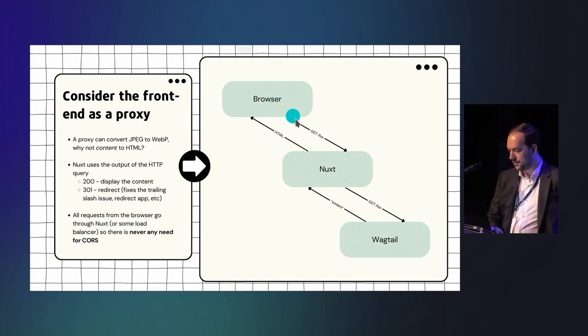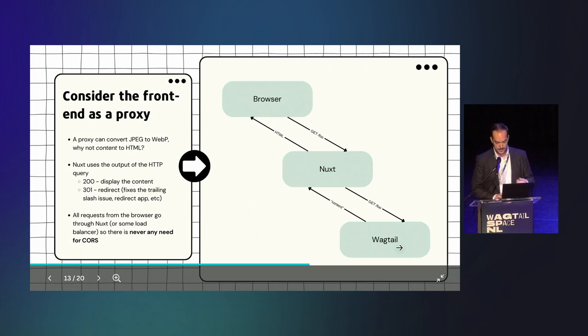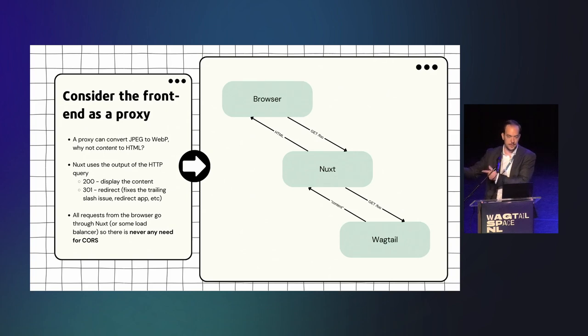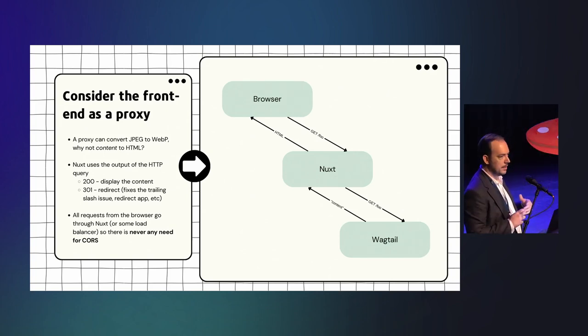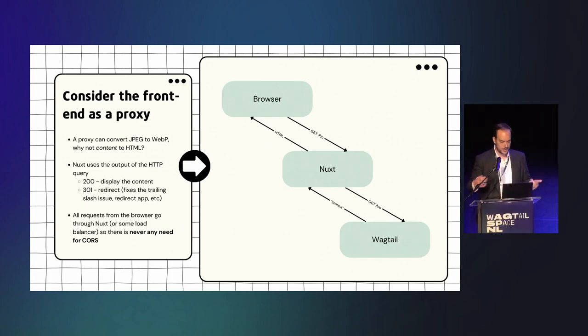So, I scratched my head a little bit when I had to make my first headless project, and figured this. So, for context, it was a conversion of a classical Wagtail project into headless one. So, in the end, you need to consider that the front-end is a proxy. Like, you can use, to give an example, you can use Cloudflare to compress your images. So, all the JPEG images are going to be compressed into WebP dynamically by Cloudflare. So, the same URL, it's just content transformation. So, why not do the same thing with the front-end? So, the browser will ask for this page to Nuxt. Can I get slash foo? And then Nuxt will ask from Wagtail, can I get slash foo? Then Wagtail returns the content, and Nuxt transforms this content into HTML.